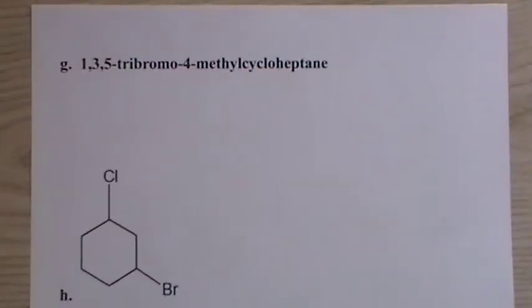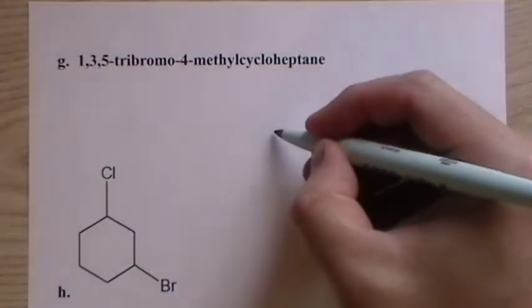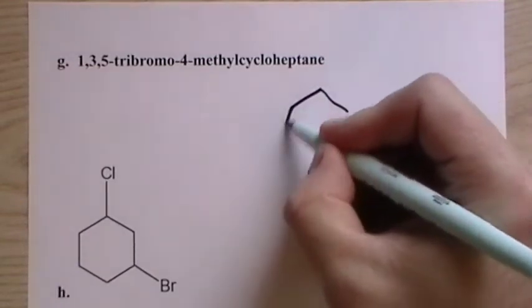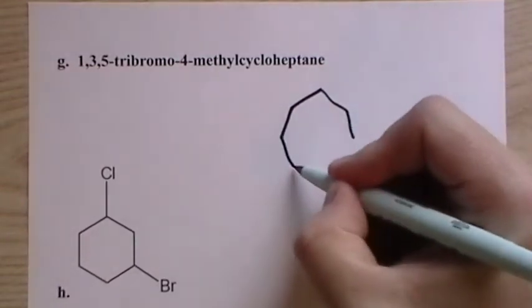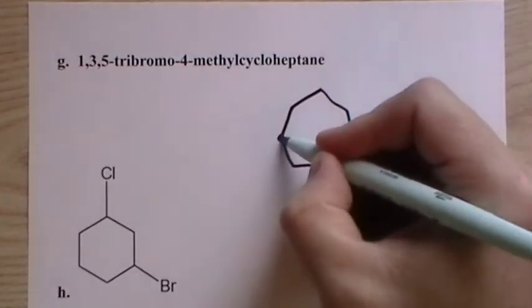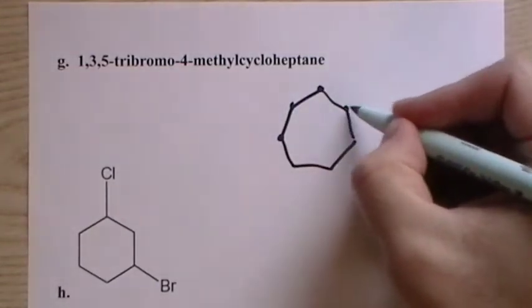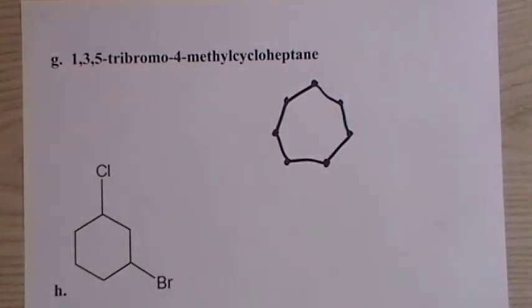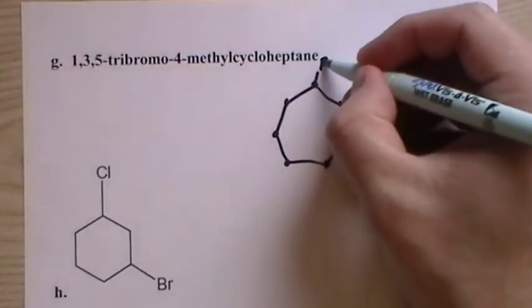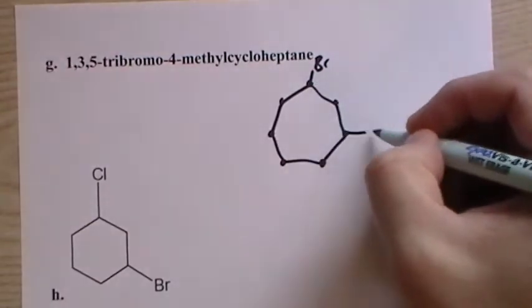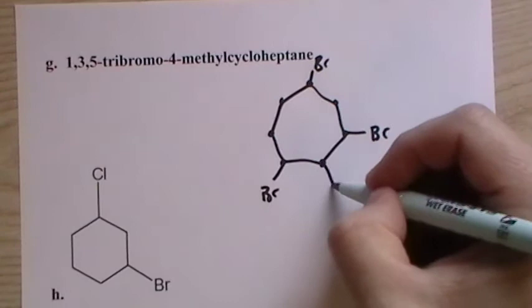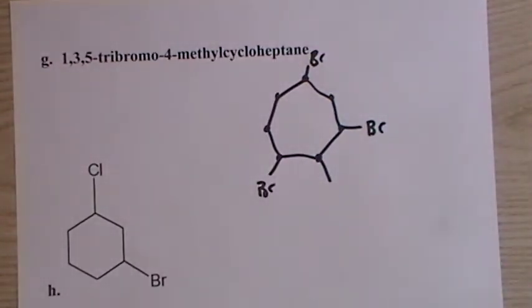All right. Next one. One, three, five, tribromo, four-methyl-cycloheptane. Oh, heptane, that's great. One, two. Just, I'm going to put dots because I didn't do the greatest job in the world. There are the seven carbons. Make this a bromine here. One, two, three. This is a bromine. Four, five. This is a bromine. And then this must be the methyl group here for four.